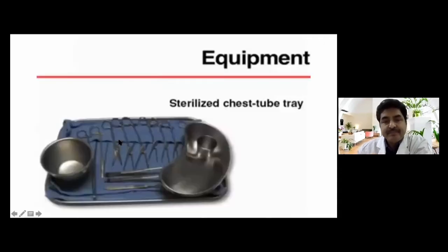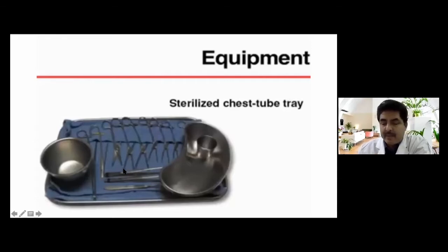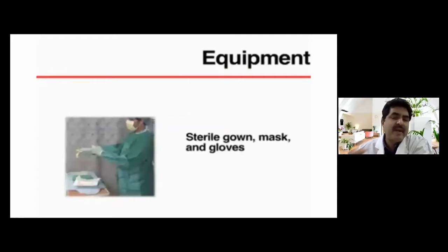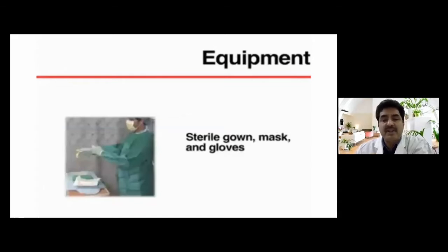Other equipment includes sterile gown, mask, and gloves. In the era of COVID-19, all personal protective equipment is mandatory, as inserting a tube into the thoracic cavity in pneumothorax or tension pneumothorax may cause a gush of air — making it an aerosol-generating procedure. Different types of masks are available for this purpose.